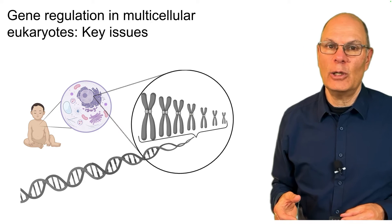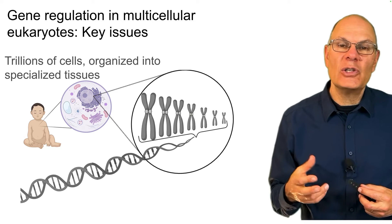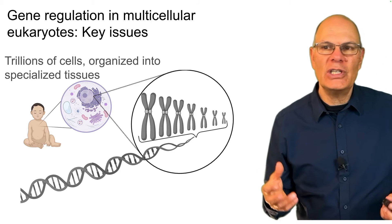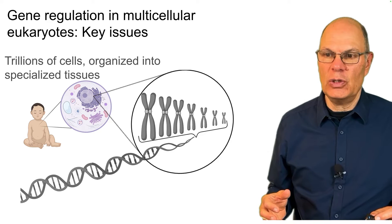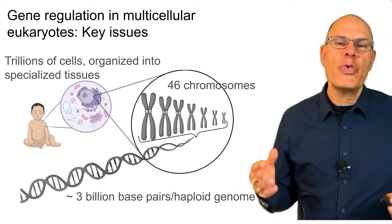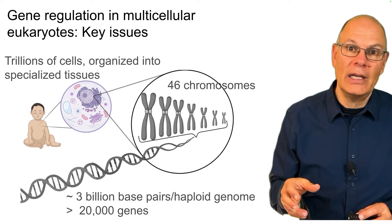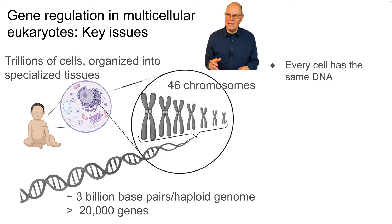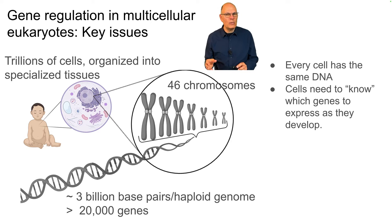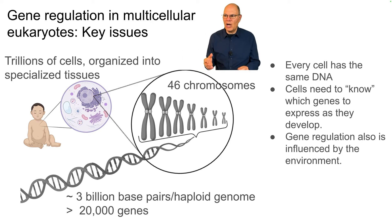Gene regulation in multicellular eukaryotes: key issues. Organisms like you and me, lizards, redwood trees, and jellyfish — any multicellular eukaryote — is composed of trillions of cells organized into specialized tissues. We have 46 chromosomes, 3 billion base pairs in each haploid genome, and 20,000 genes. Gene regulation is a big and complex issue. Every single cell has the same DNA, but cells need to know which genes to express as they develop. Gene regulation is also influenced by factors in the environment — how do genes get turned on and off?